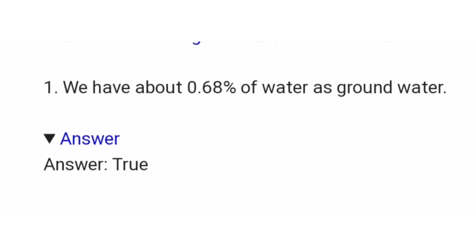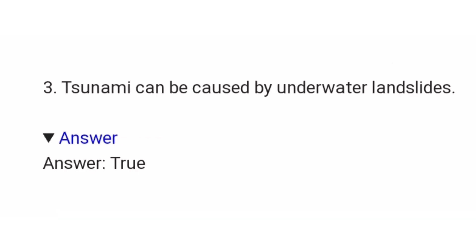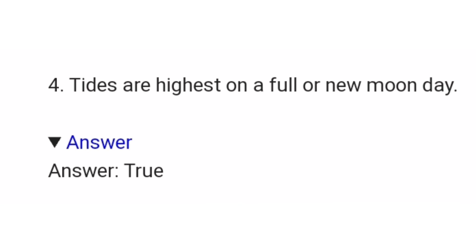The first true/false question is we have about 0.68% of water as groundwater. The answer is true. The second is ocean water is calm and still. The answer is false. The third is tsunami can be caused by underwater landslides. The answer is true.